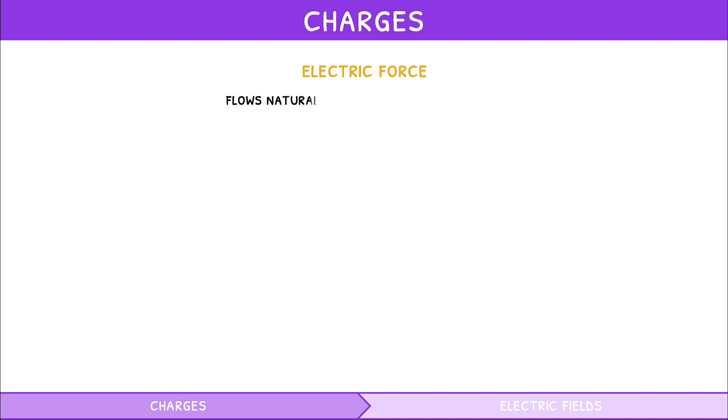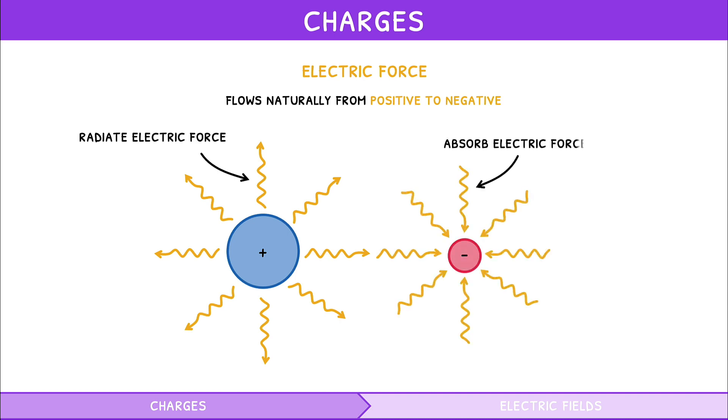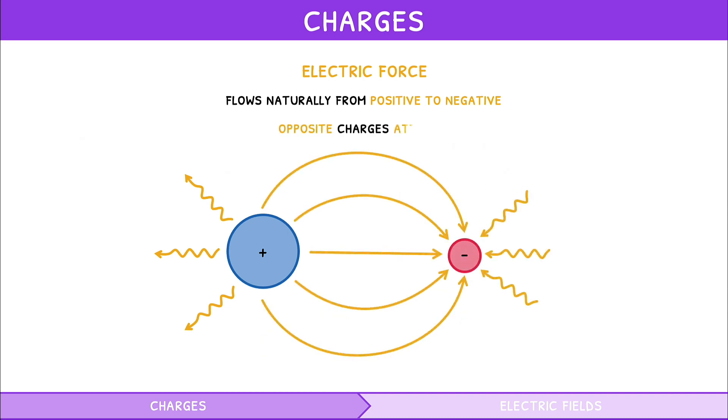It flows naturally from positive to negative ions. So, since positive charges radiate electric force, and negative charges absorb it, it causes opposite charges to attract.